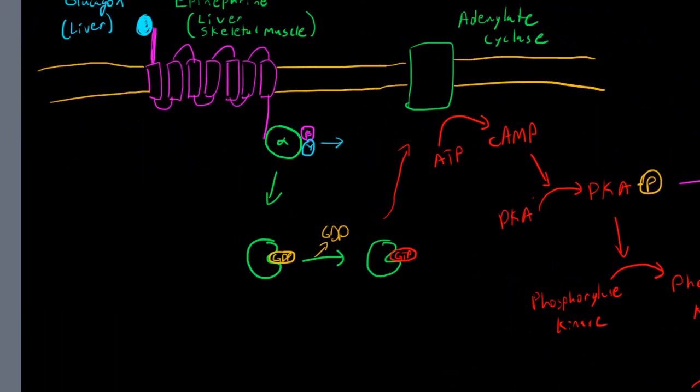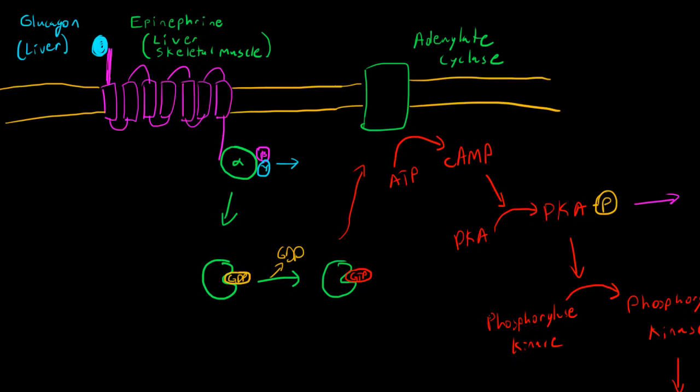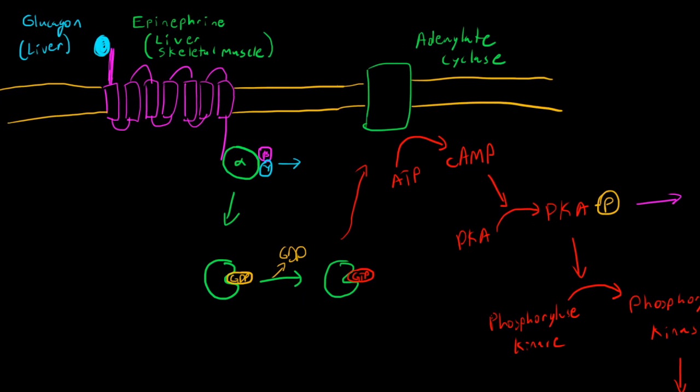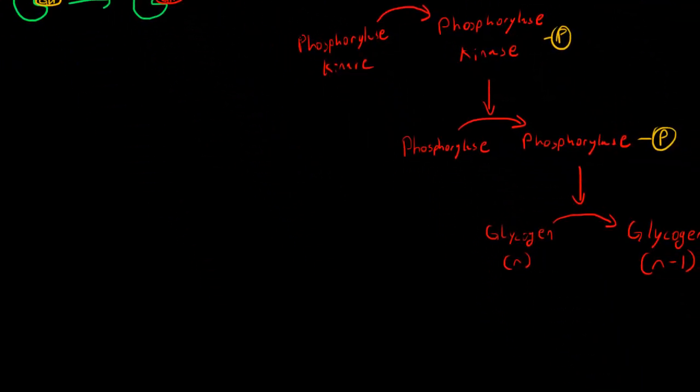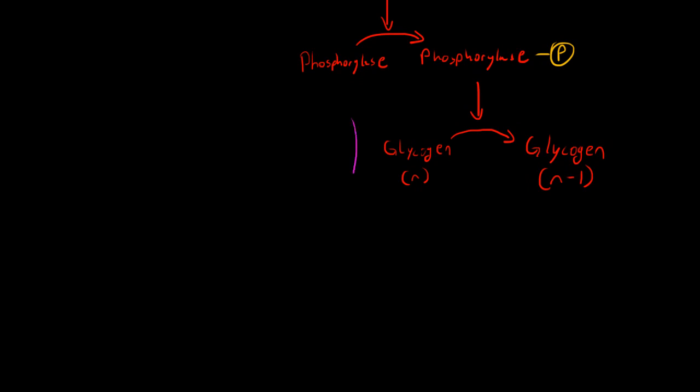This pathway is exactly the same whether it's glucagon or epinephrine binding - two totally different physiological situations, sometimes different physiological locations (liver or skeletal muscle). However, the end goal is still the same: we go through this massive pathway to break down glycogen so we can free up glucose to be used by the cell. I hope you found this useful, I'll see you in the next one, good luck studying.